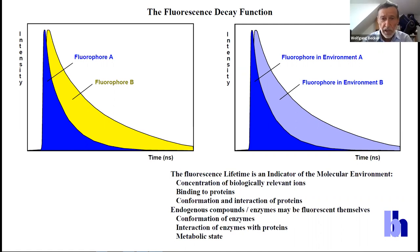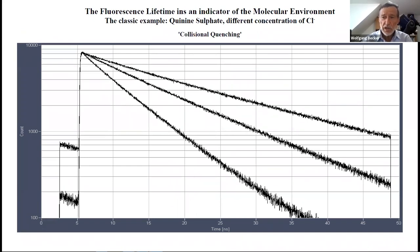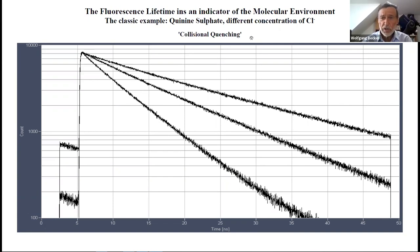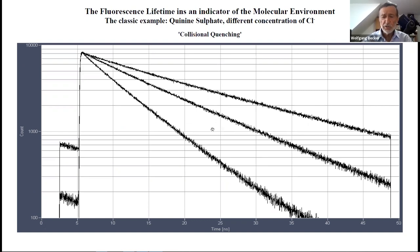Here are some examples of how and why fluorescence decay curves change with the molecular environment. The classic example is quinine sulfate, which changes its lifetime depending on the concentration of chloride ions. The mechanism is collisional quenching: when the molecule is in the excited state and collides with the chloride ion, the chloride ion takes away the energy and the molecule returns to the ground state. The fluorescence lifetime is inversely proportional to the concentration of the chloride ions.